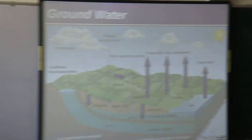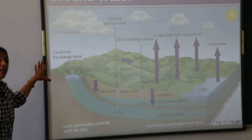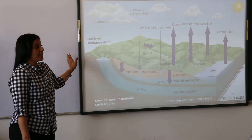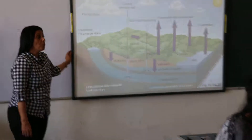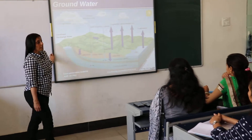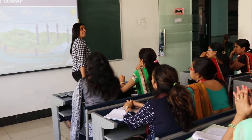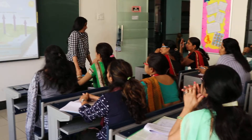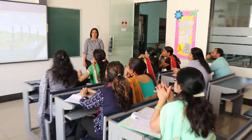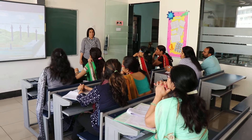Groundwater is one of the most important sources of water. How does groundwater get replenished? Through rain. The major source of replenishing groundwater is rain.